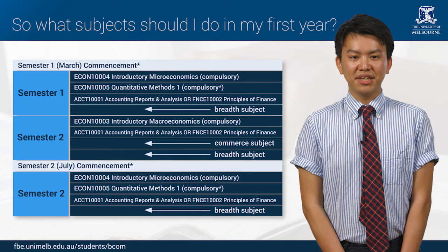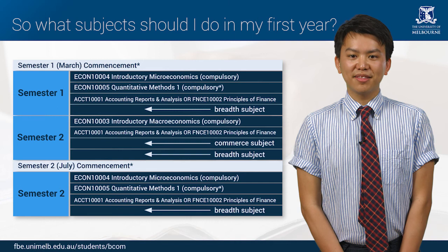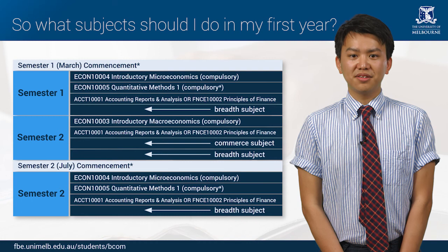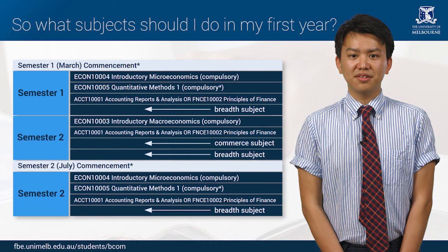It's okay if you don't know which major you would like to do. The great thing about the BCom is that you get to try different level one subjects before deciding which major you would like to do. With your last subject for your first semester you might want to add another commerce elective or a breadth subject. Not sure which one? Check out the university handbook.